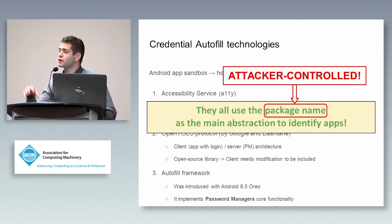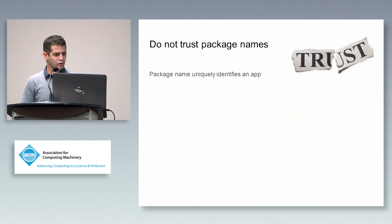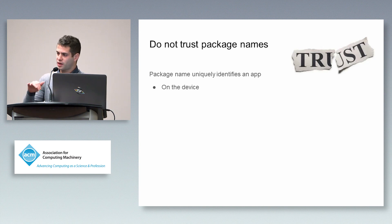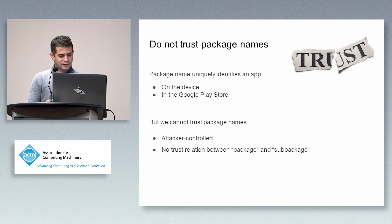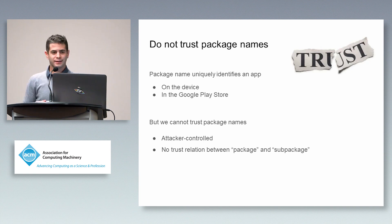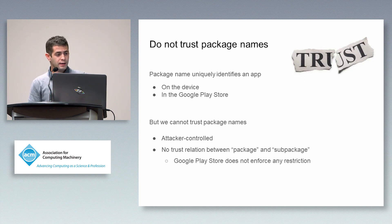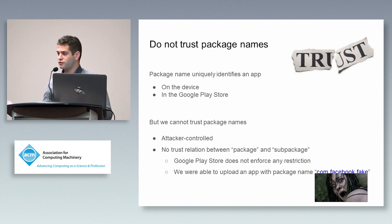Using the package name is really bad because the package name is attacker-controlled — anyone can create an Android application with any package name. There are some restrictions: the package name uniquely identifies an application on your device, so two applications with the same package name cannot coexist, and in the Google Play Store apps are indexed by package name. But we cannot trust package names because there is no trust relation between a package name and a sub-package, unlike the web world where visiting mail.google.com guarantees mail is a subdomain of google.com. The Google Play Store doesn't enforce any restriction, and we were able to upload an Android application named com.facebook.fake to the Google Play Store.